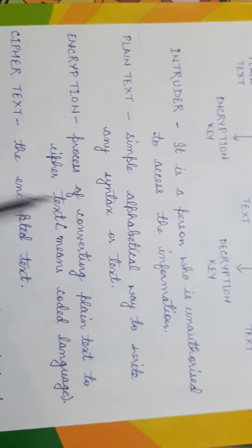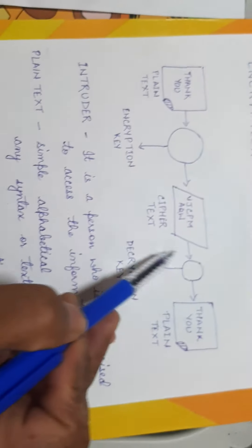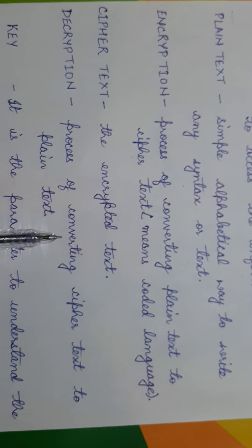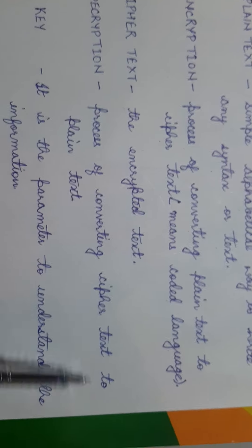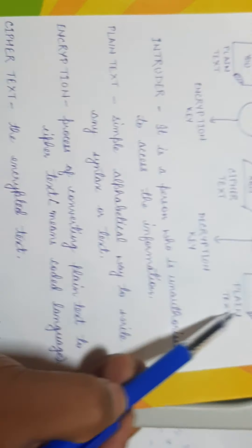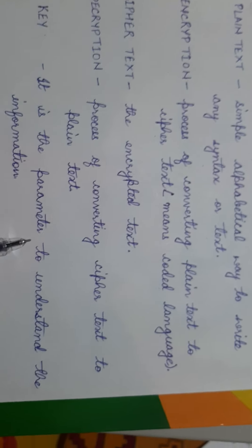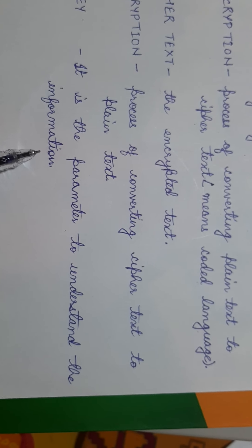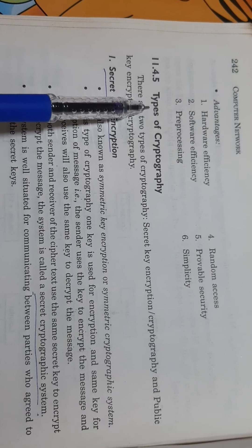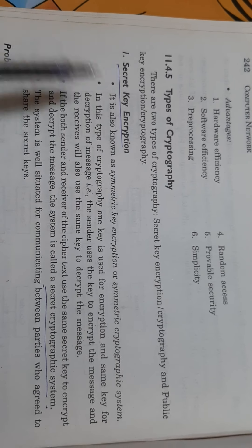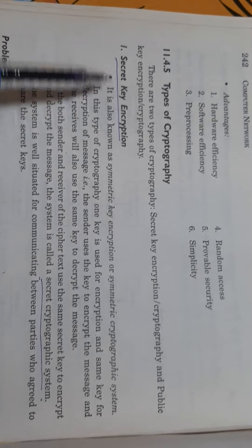Encryption is the process of converting plain text to cipher text. Cipher text means coded language — it is the encrypted text. Decryption is the process of converting cipher text back to plain text. A key is the parameter used to understand the information.